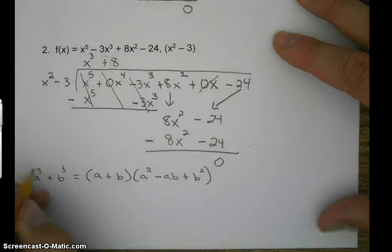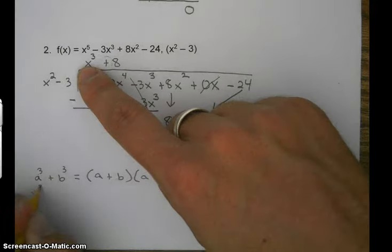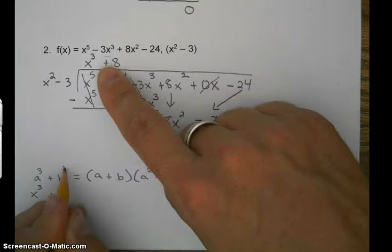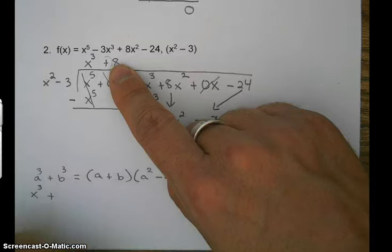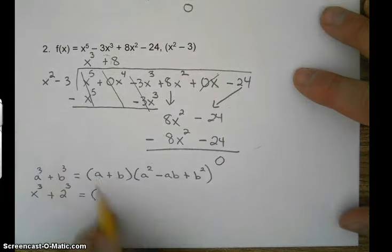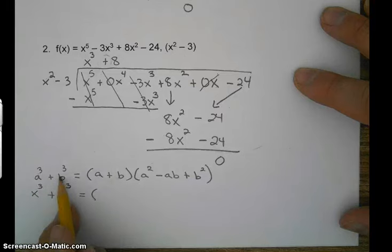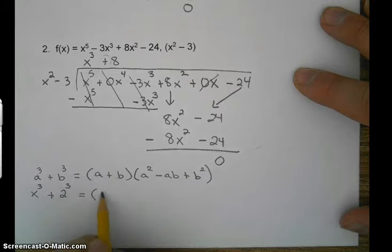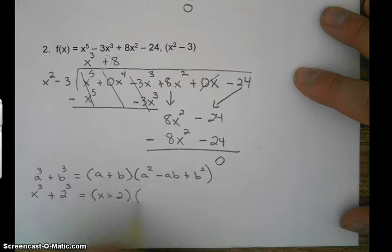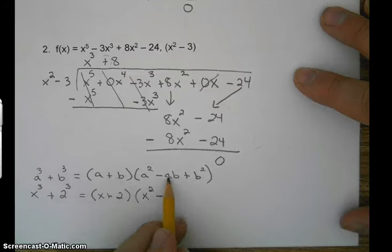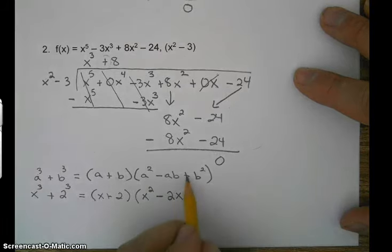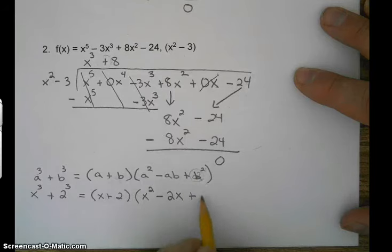So we have x cubed. And then what number cubed is 8? 2. Good job. 2 times 2 times 2. So a is x, b is 2. So fill it in. So x plus 2 equals, filling in the x for a minus, and this would be x times 2, but we don't write it like that. We write it like this. 2 times x plus, and then 2 goes in for b. So 2 squared is 4.